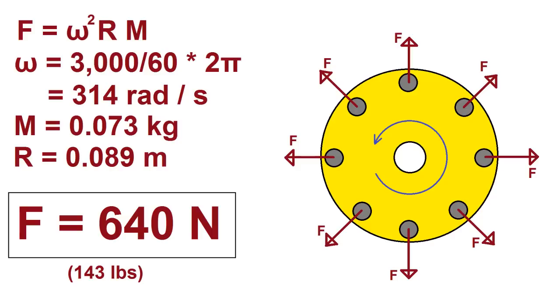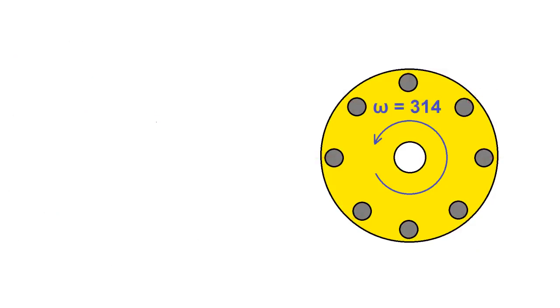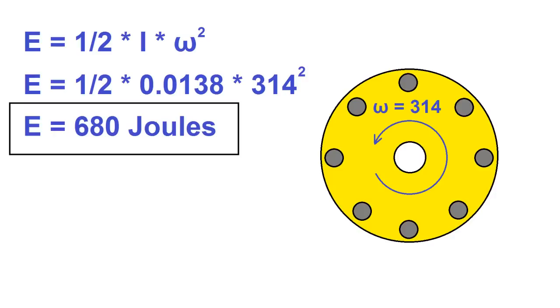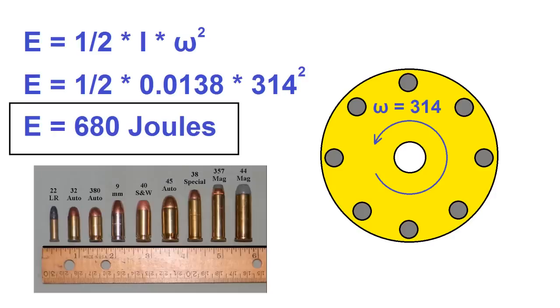I also need to know how much energy it will take to spin up the wheel so that I can choose a big enough battery. Rotational kinetic energy is given by one half I omega squared. I have all those numbers, so plugging them in gives me 680 joules. That's approximately the same amount of energy as a 45 caliber bullet. Anyway, back to the build.